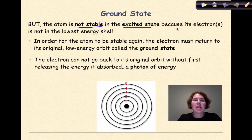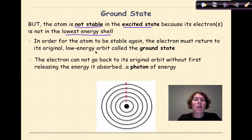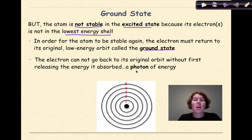Because the electrons are not at the lowest energy shell, the atom is not stable. In order for the atom to be stable again, the electrons must return to their original low energy orbit, called the ground state. The electron cannot go back to its original orbit without first releasing the energy it absorbed.